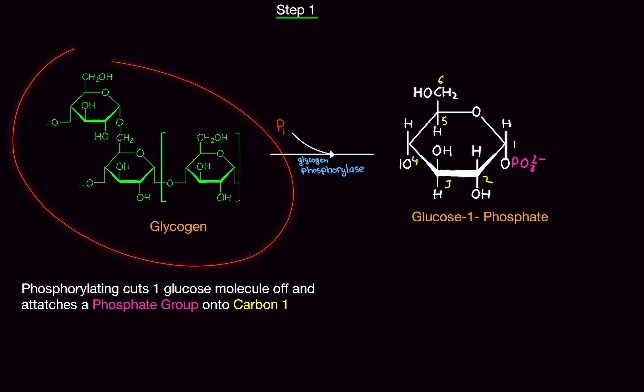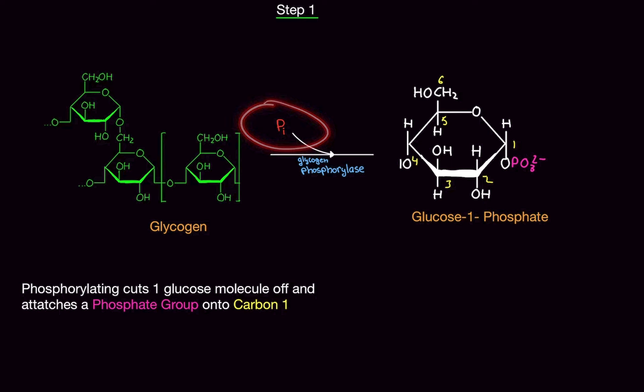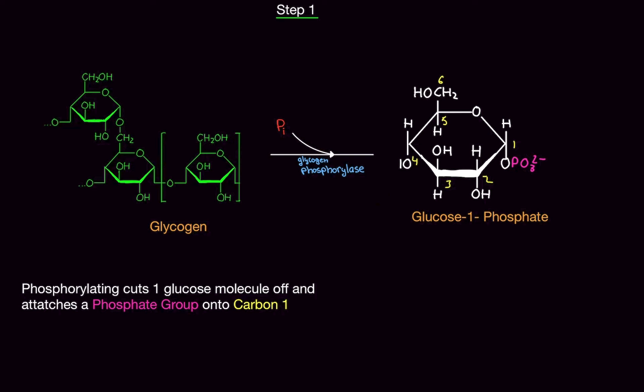Step one: we take glycogen, which is a bunch of glucose molecules, and we add a phosphate molecule to it using an enzyme called glycogen phosphorylase. This phosphate basically karate chops the molecule and slices it up, breaking off one glucose molecule from the chain. The phosphate group gets transferred onto carbon number one, so we call this product glucose-1-phosphate. The enzyme cuts off just one glucose molecule from this long chain we call glycogen.